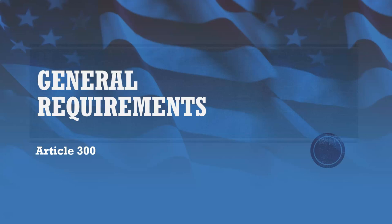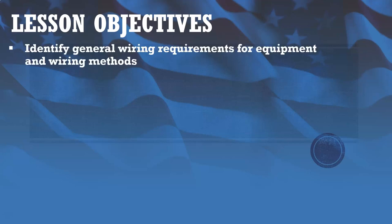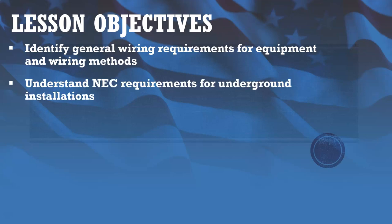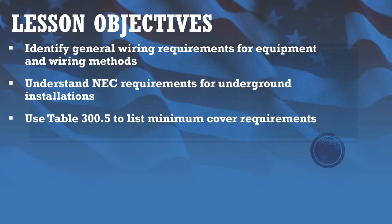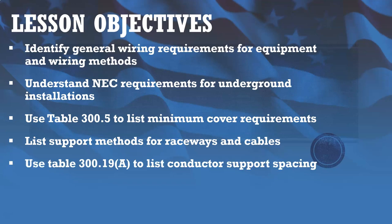This is going to be our first lecture of Module 3. In this lecture, we're going to be going over the general requirements of Article 300. Those are our objectives for this lesson: we're going to identify general wiring requirements for equipment and wiring methods, understand the NEC requirements for underground installations, use Table 300.5 to list minimum cover requirements, list support methods for raceways and cables, and use Table 300.19A to list conductor support spacing.